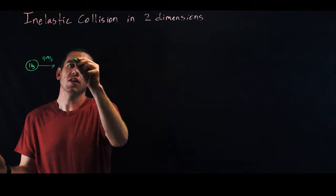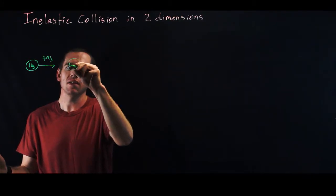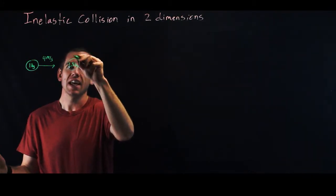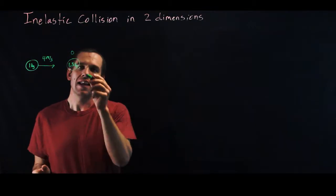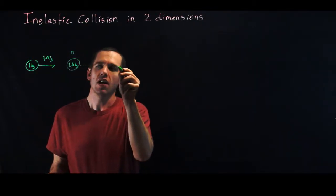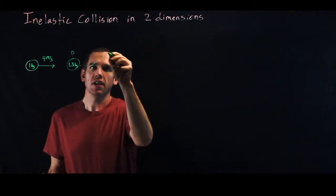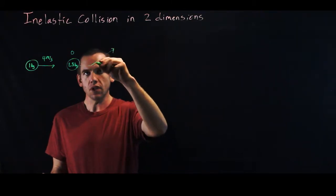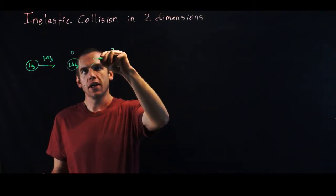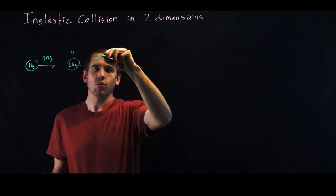And it's going to strike another ball over here that has mass of 1.5 kilograms that is initially at rest. And as a result of this collision, this one kilogram ball ends up going this way. So this is our one kilogram ball and it's going to go that way at say three meters per second.